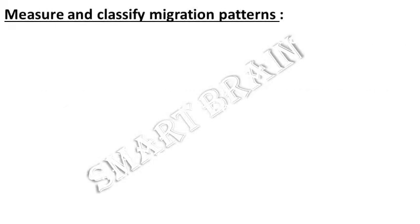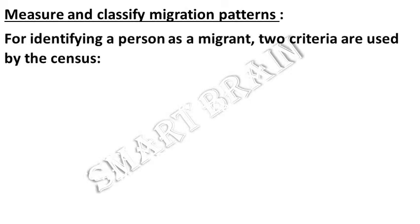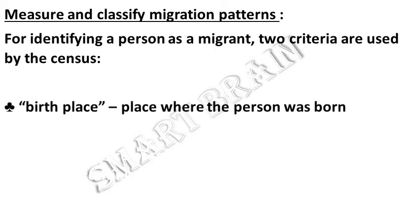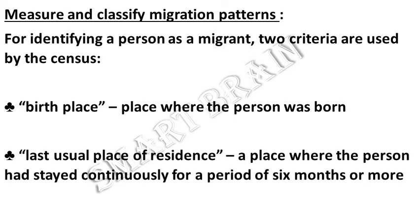To measure and classify migration patterns, two criteria are used by the census to identify a person as a migrant: their birthplace — the place where the person was born — and last usual place of residence — a place where the person had stayed continuously for a period of six months or more.